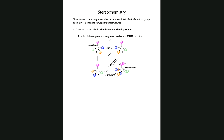If you notice that carbon in the center, there are one, two, three, four distinct groups attached to that tetrahedral atom. Let's call that structure X. If you imagine a little mirror in the middle to the right side of that, and then you envision what the mirror image of that structure looks like, you can then sort of map every group that's attached to that central atom based on the color coding.